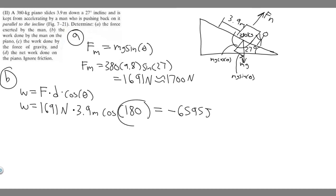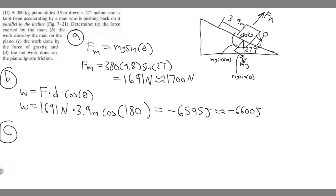So work done by the man = 1,691 × 3.9 × cos(180°). Since cos(180°) = −1, this gives us −6,595 joules, which we can round to about −6,600 joules. Keep this value in mind for part (d).